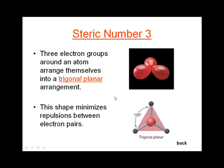Steric number of three: a nucleus surrounded by three electron groups. As they find a geometry that gets them as far apart from each other as possible, they will adopt a trigonal planar arrangement. We use the word 'trigonal' whenever we're looking at a shape that has three points — like a triangle with three sides. These three sides all lie in a plane, making it a trigonal planar arrangement.